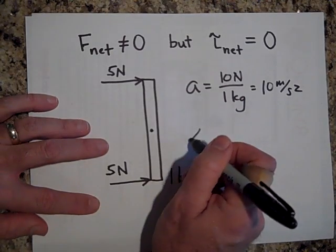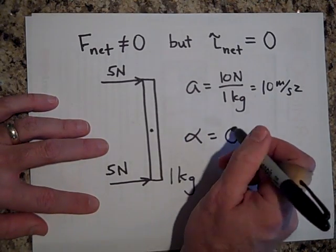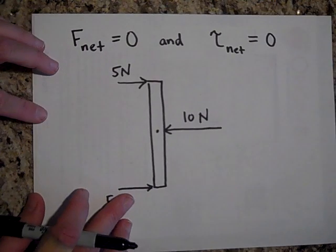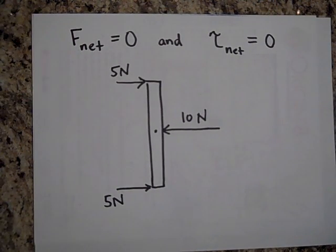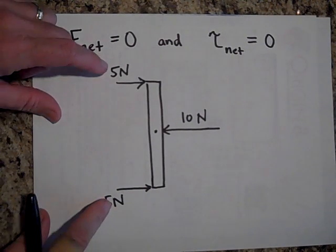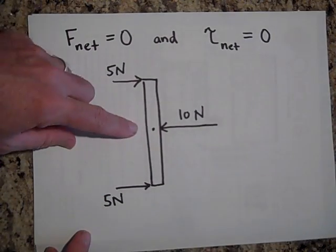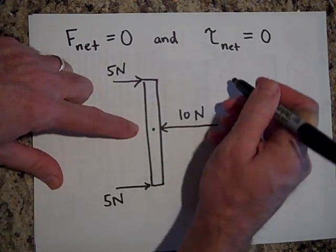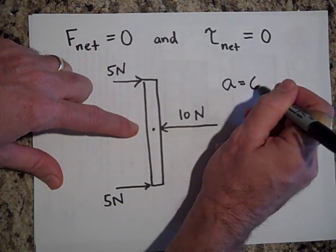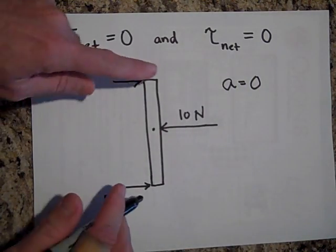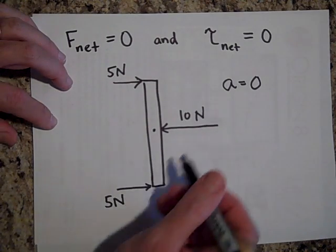So alpha is equal to zero. Here's a case where the net force is equal to zero and the net torque is equal to zero. So let's talk net force first. We got a five and another five plus a negative 10. So the net torque is equal to zero. So A is zero. Excuse me, the net force is equal to zero. So A is zero.